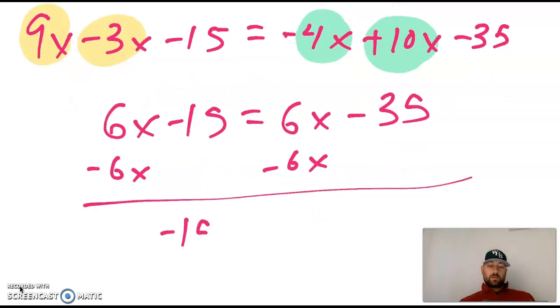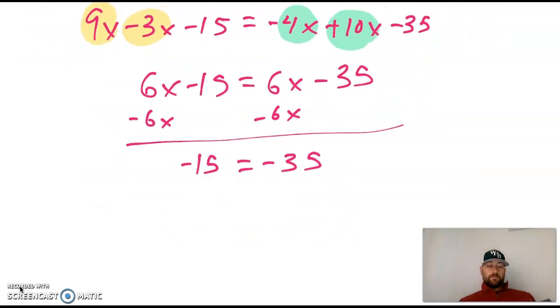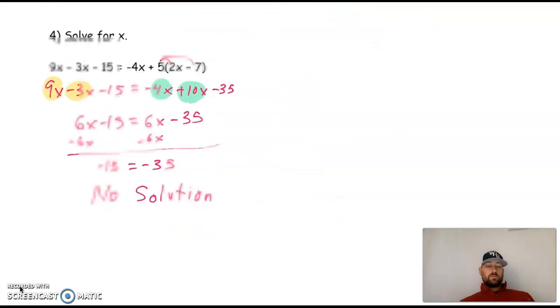Take away the same variable on both sides. Okay. Does negative 15 equal negative 35? No. So we call that no solution. Okay. Same coefficient, different constant. That is no solution. All right.